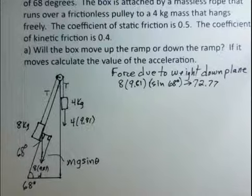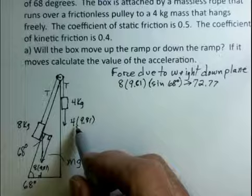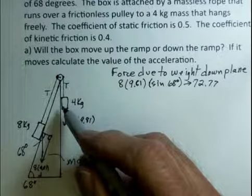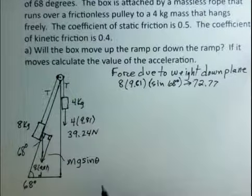It's not aided, but opposed by this force. This mg would like to pull the system with a box down the ramp. This mg would like to pull the system this way and the rope would carry the 8 kilogram box up the ramp. And how strong is this? Well, 4 times 9.81 is 39.24 Newtons.